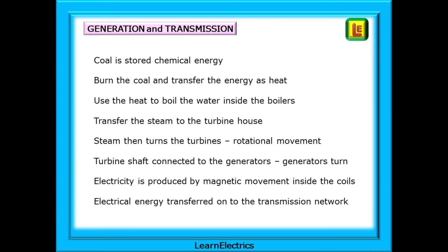If this was a coal-fired power station, this is in simple form what will happen. Coal is a form of stored chemical energy. We burn the coal and transfer the energy as heat, and then use the heat to boil the water inside the boilers. Then we can transfer the steam to the turbine house and the steam then turns the turbines, a rotational movement. And because the turbine shaft is connected to the generators, the generators turn. The electricity is produced by magnetic movement of the rotor inside the coils, and this electrical energy is transferred to the transmission network of pylons.